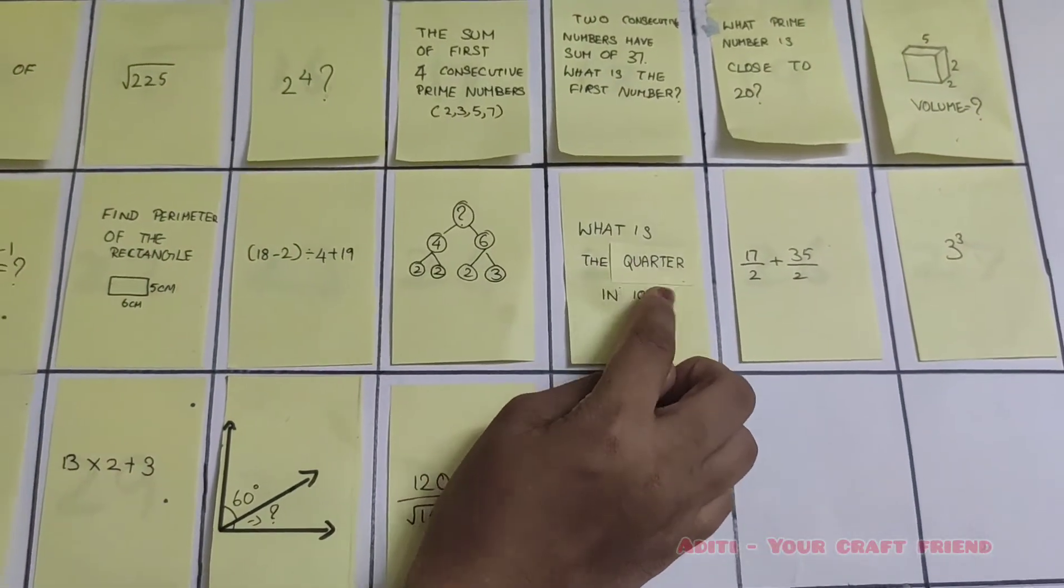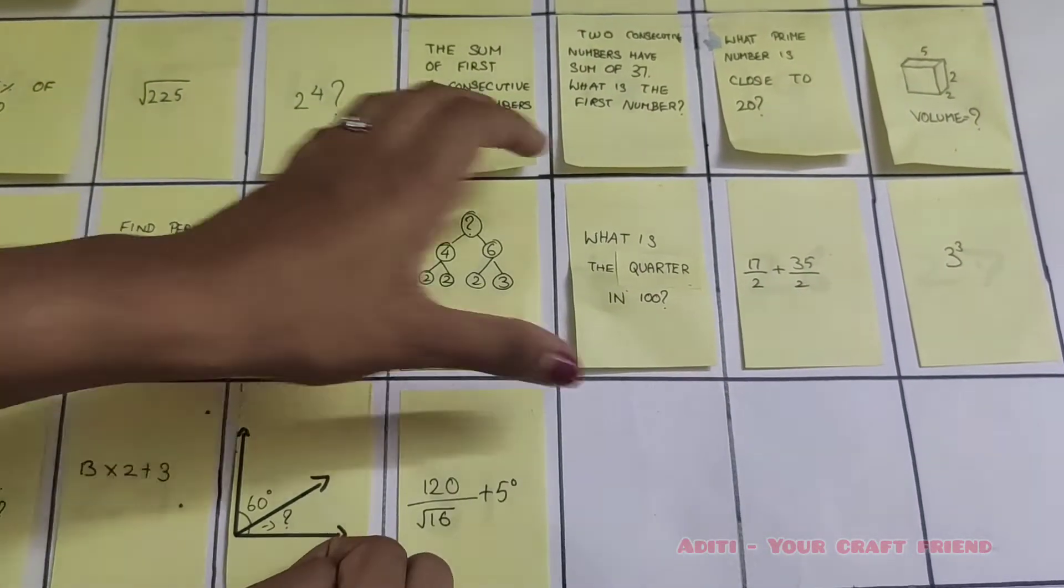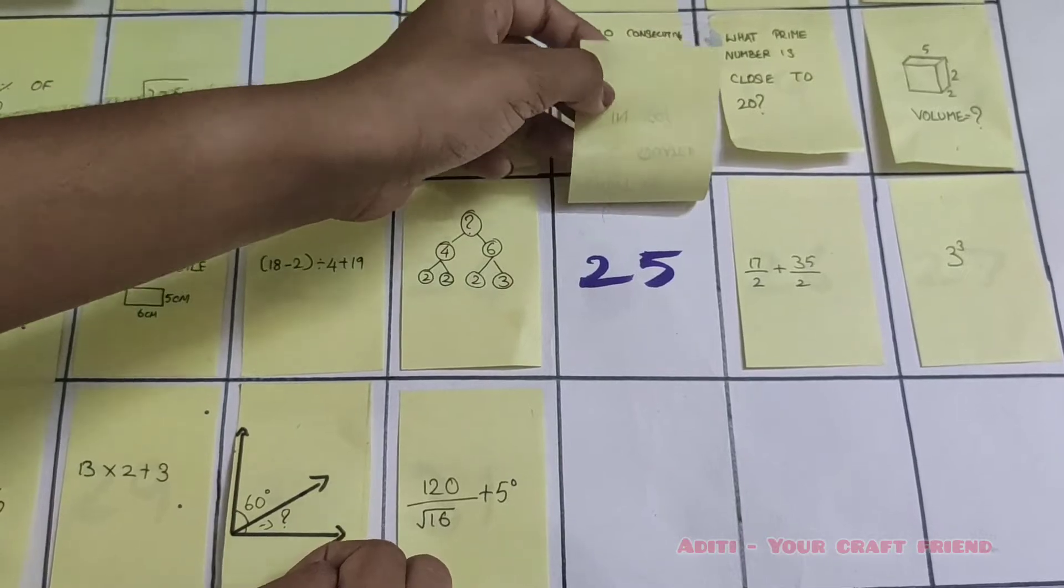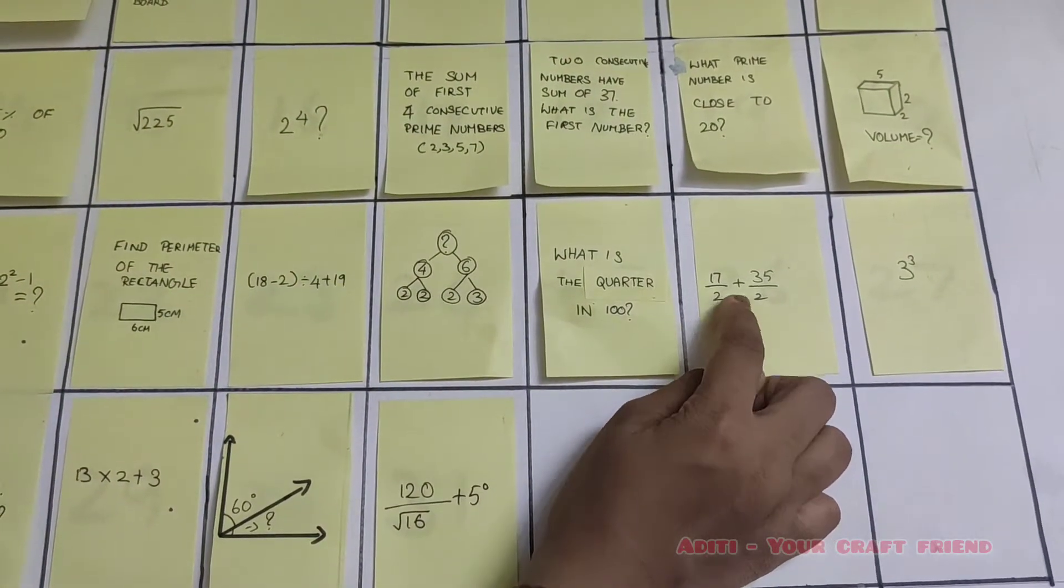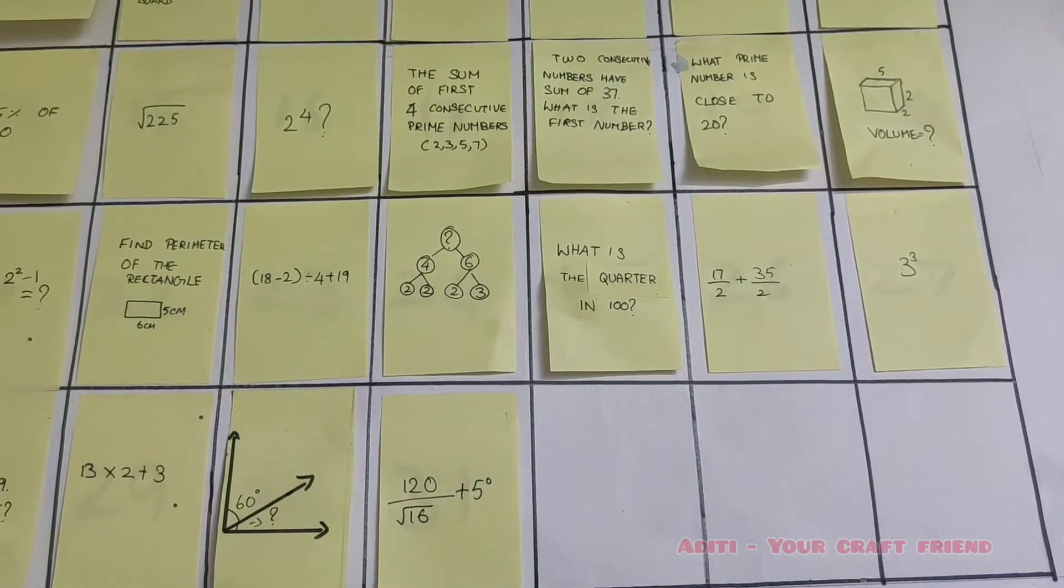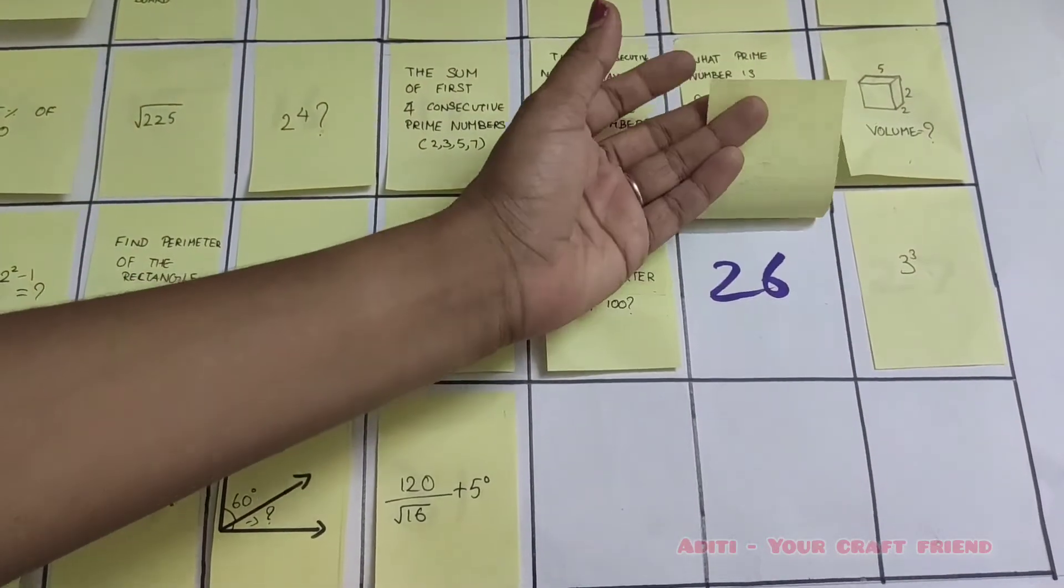What is the quarter in 100? It's 25. 17 by 2 plus 35 by 2. What is the answer? 26.